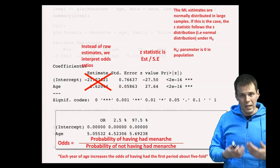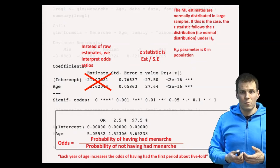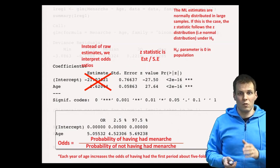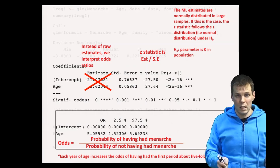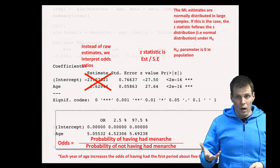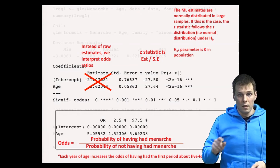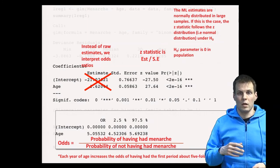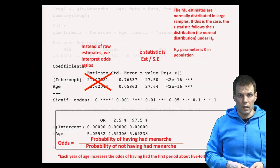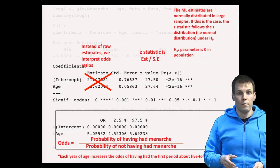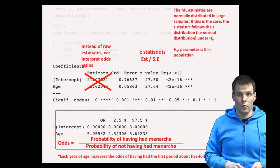The problem still is that with odds ratios, we can't really say how much does the actual probability increase, because odds and probability are not the same thing. And quite often we want to know how much does the probability of having had menarche depend on the age and what does the effect look like. To do that, we would need to plot the marginal predictions from the model.